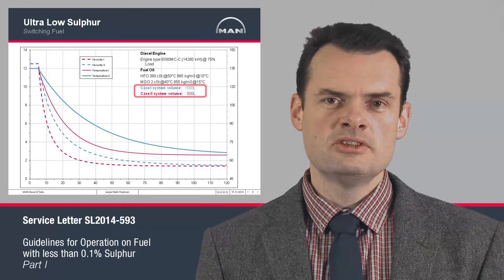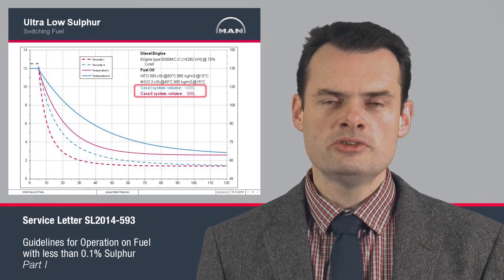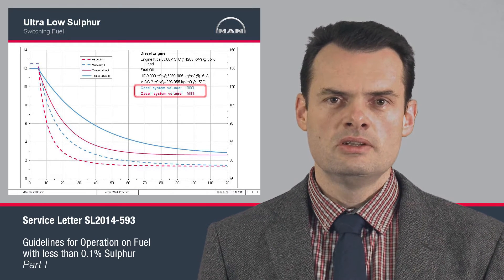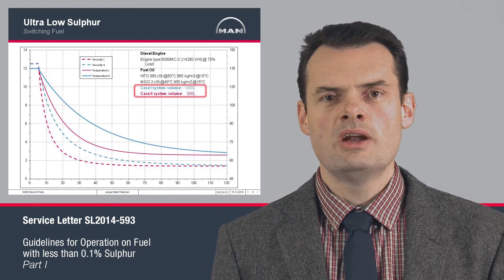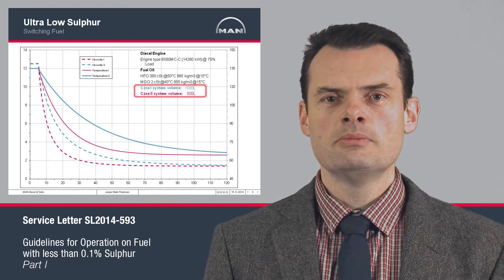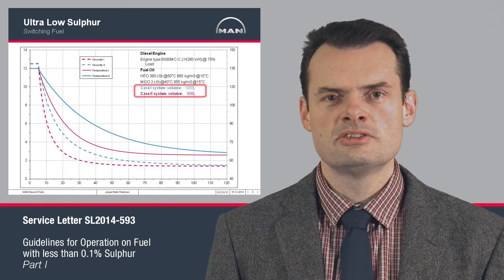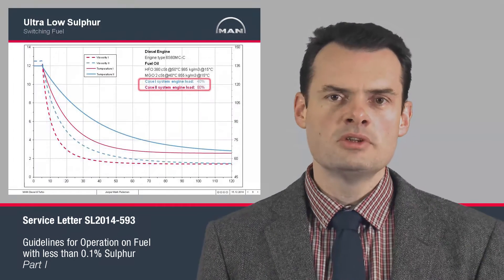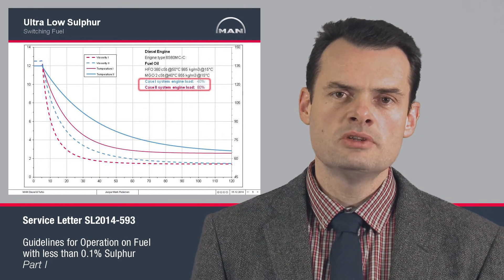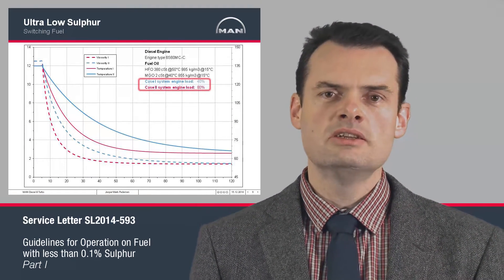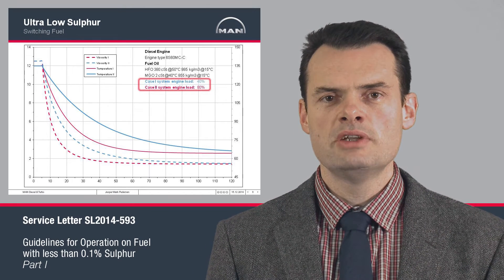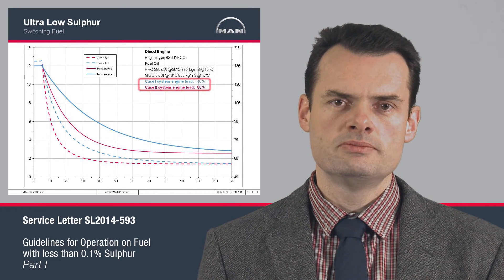The size of the system itself also has a big impact on the viscosity drop. The viscosity changes more rapidly if the system volume is smaller compared to a bigger system. The consumption of the main engine also has a big impact, as the consumption of the main engine is the governing factor for the amount of distillates fed into the system and into the mixture.